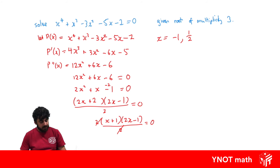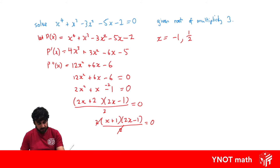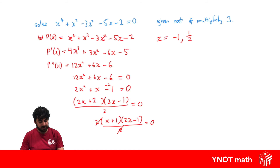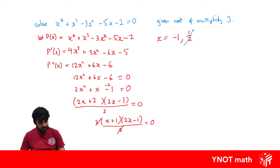To determine which root has multiplicity 3, we can either test these values in the original polynomial or recognize that since this is a monic polynomial, it cannot have a fractional root of multiplicity 3. So we rule out x = 1/2, and the root of multiplicity 3 must be x = −1.